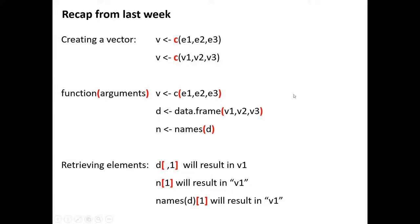We talked about vectors, rows of data and tables being matrices or data frames in R. To create a vector you have to use the combine function, C. Every function in R is followed by round brackets, as you can see here. Inside the round brackets come the inputs or the arguments of the function — everything that it needs to be able to perform its function.